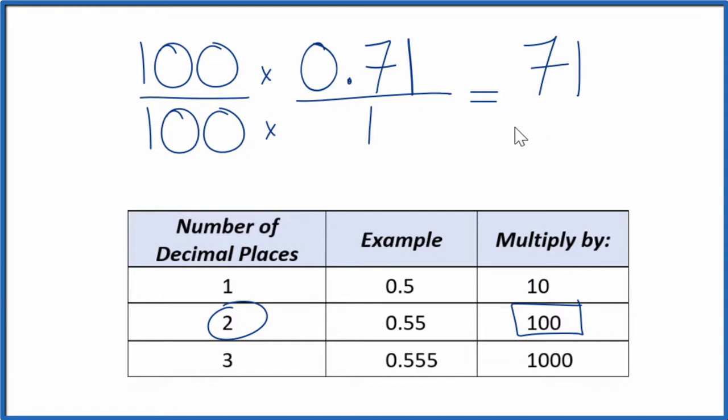So 100 times 1, that gives us 100. And now we have our fraction, 71 over 100. So the decimal 0.71 is equal to the fraction 71 over 100.